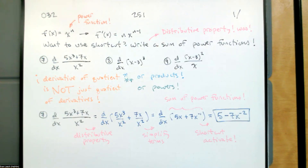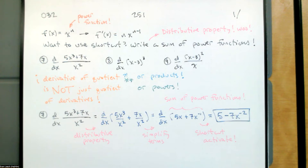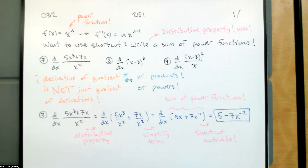If we can write a sum of power functions, maybe we should. If you use the quotient rule on this because you have secret mathematical knowledge, what you got will be the same as this when you simplify. So it should simplify to 5 minus 7x to the negative 2. If you wrote this as 5 minus 7 over x squared and combined those two, you'll end up with 5x squared minus 7 over x squared. That should be another simplified form of your answer.